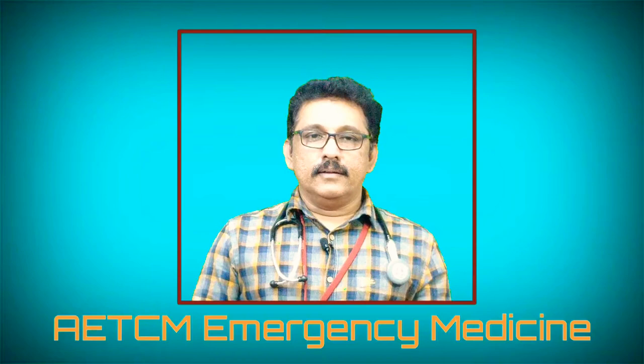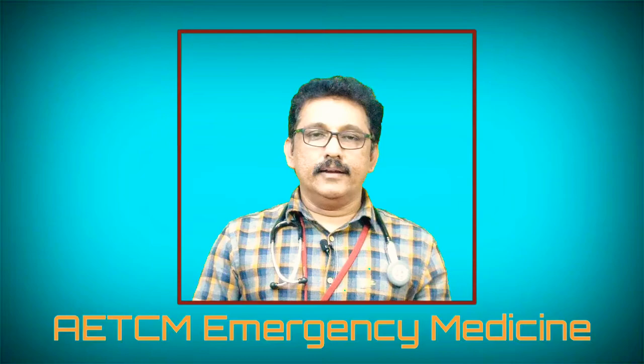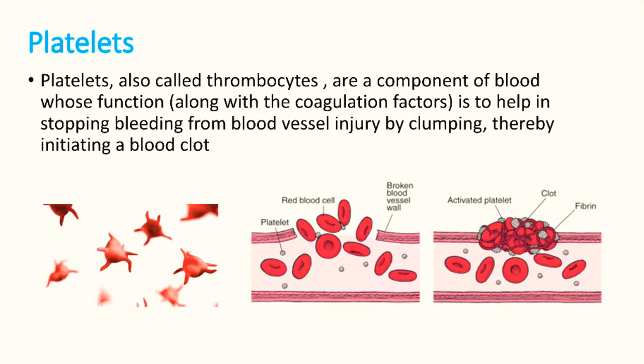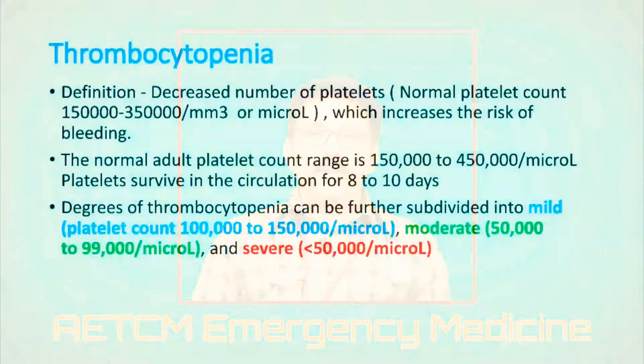Platelets are designed to produce a clot whenever there is a bleed in our body. It is a major component of blood. Whenever there is a small injury, platelets will aggregate at that part and produce a clot. Whenever our platelet count is less than normal, we call it thrombocytopenia.